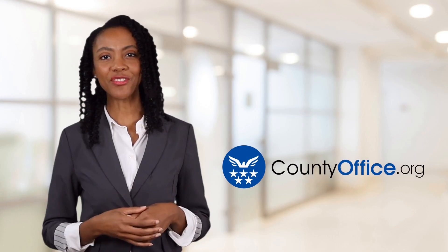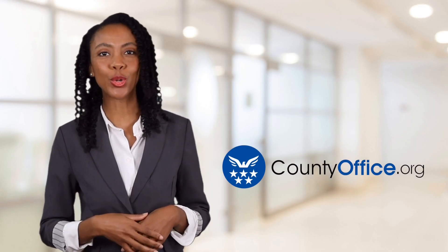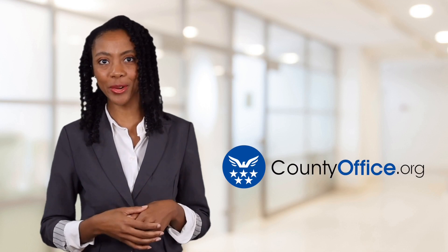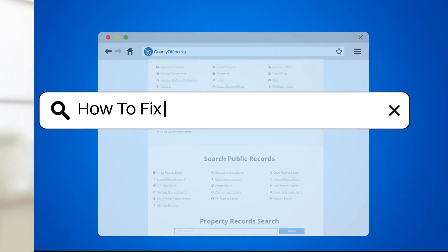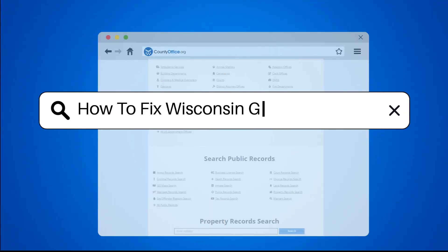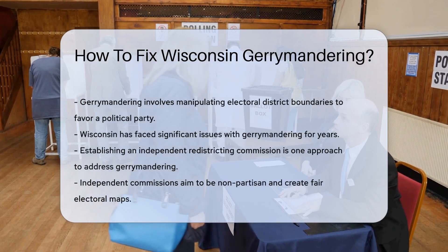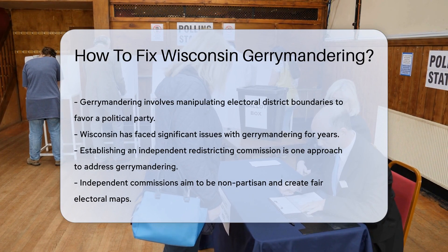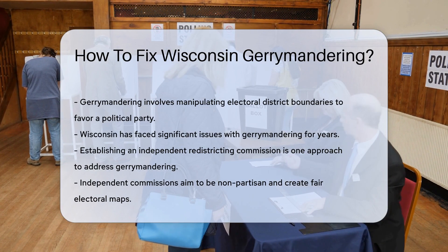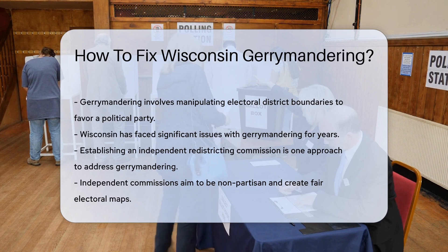Welcome to County Office, your ultimate guide to local government services and public records. Let's get started. How to Fix Wisconsin Gerrymandering. Gerrymandering is the manipulation of electoral district boundaries to favor a particular political party. In Wisconsin, this has been a contentious issue for years.